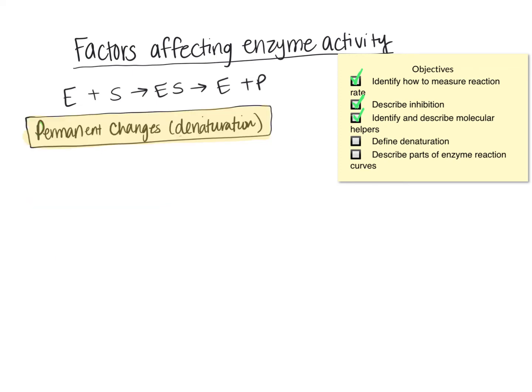Next, we're going to talk about permanent changes, or denaturation of an enzyme. Denaturation is when an enzyme loses its ability to interact with the substrate and produce a product. We typically think of denaturation as a permanent change — we're permanently turning off an enzyme. There are several factors that affect enzyme activity, and one of them is temperature. We're going to look at enzyme activity as it relates to temperature using a graph.